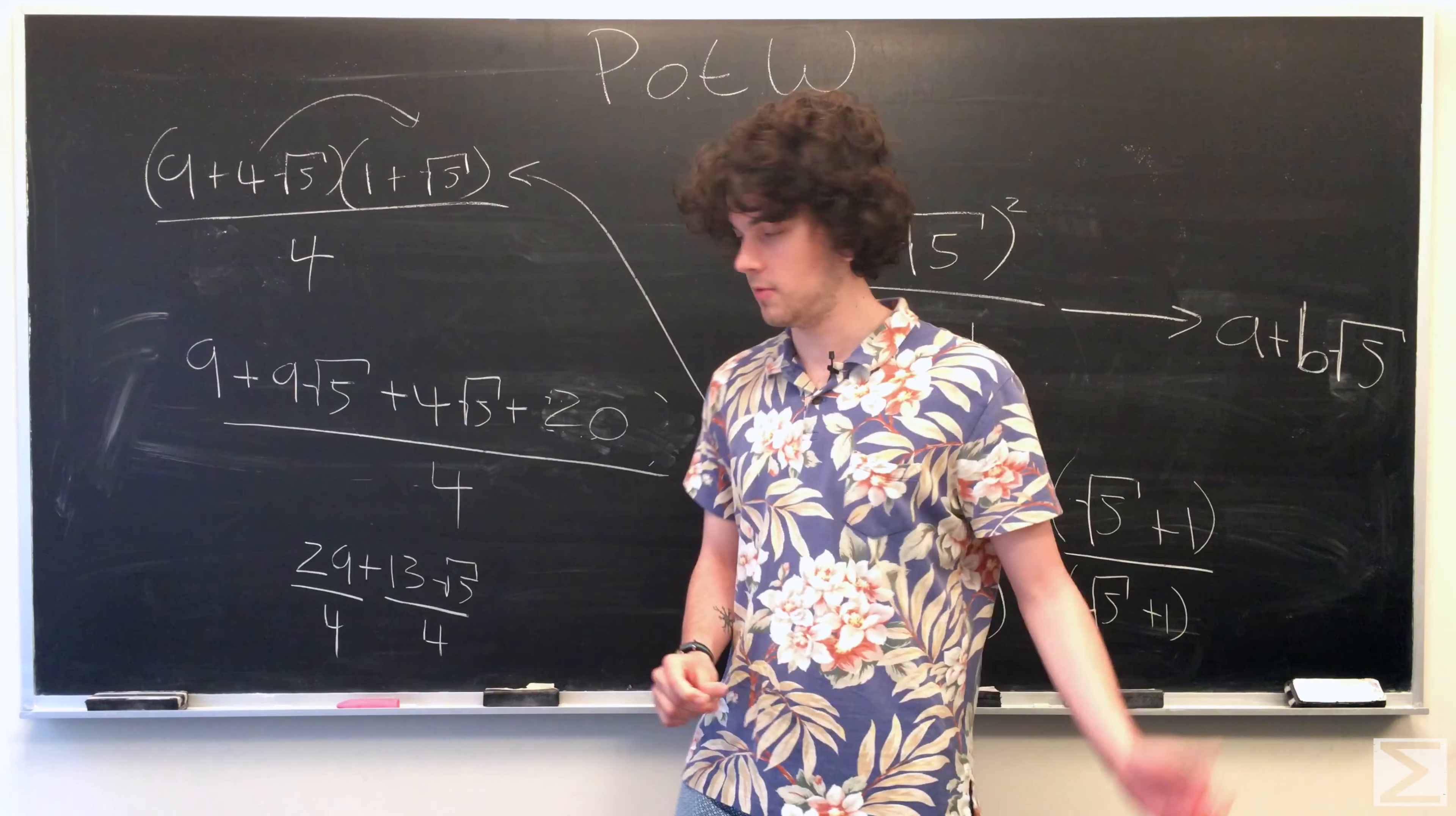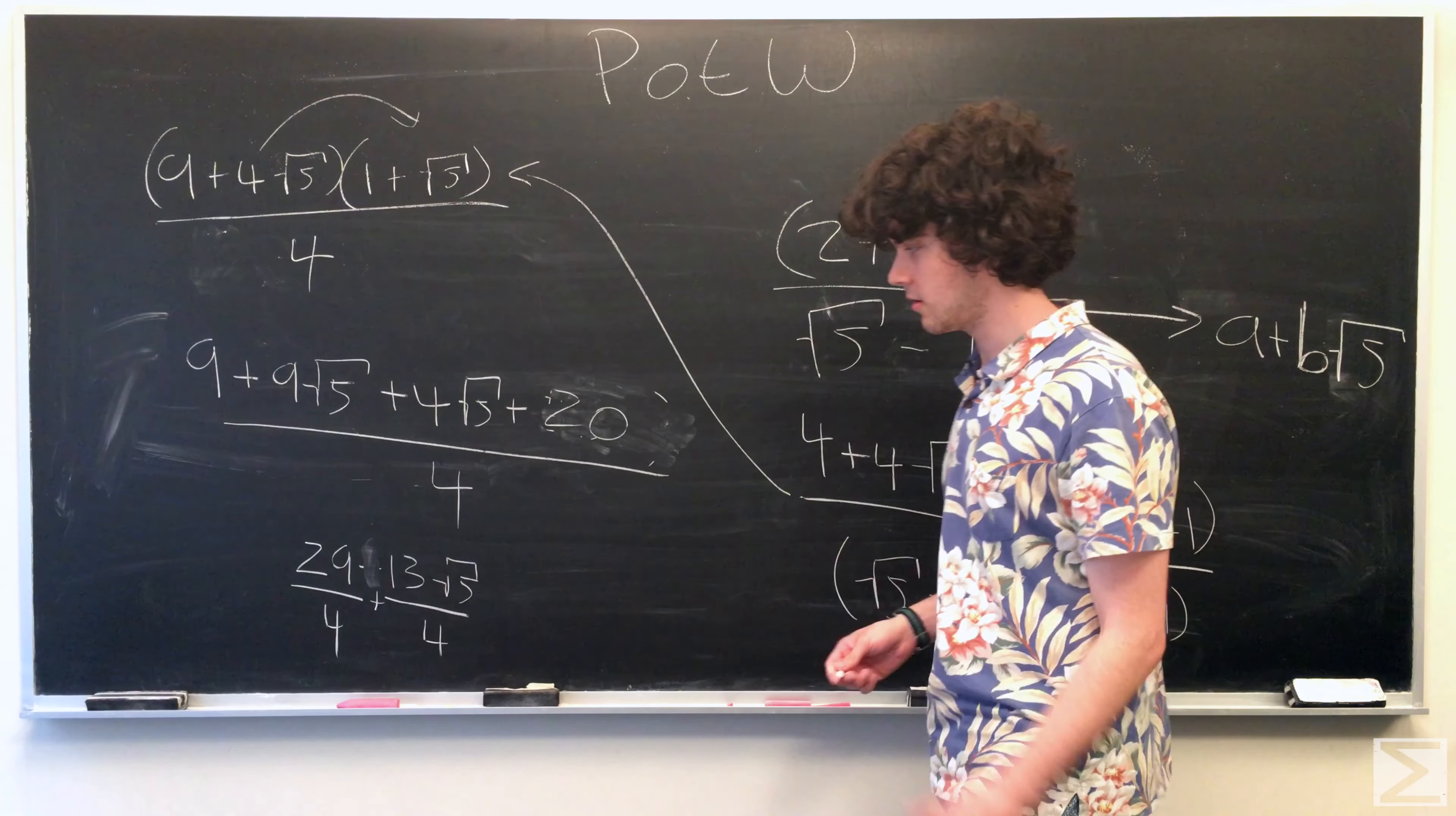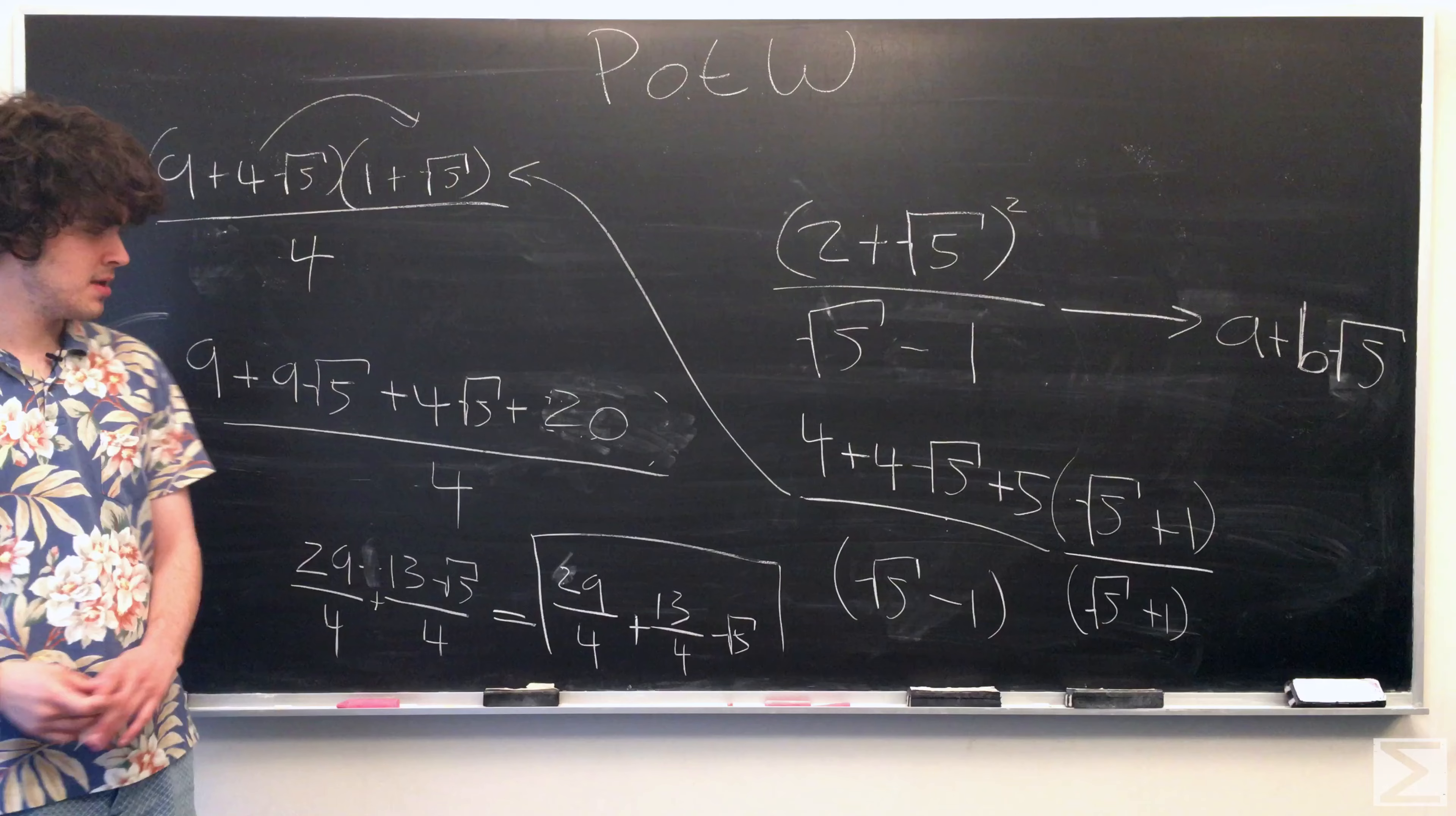And keeping our final form in mind, I just broke up the fraction into sum of two fractions. And of course, if you want to be perfectly thorough with it, we can just take that root 5 out. So we have a plus b root 5. And so that's our answer.